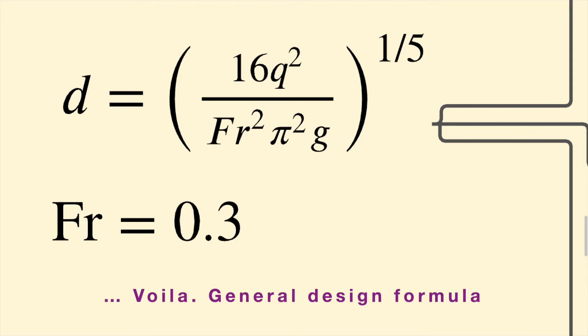And voila! We have our relationship between the diameter, the flow rate, and the Froude number. We can set the Froude number to 0.3 and use this equation in several ways.